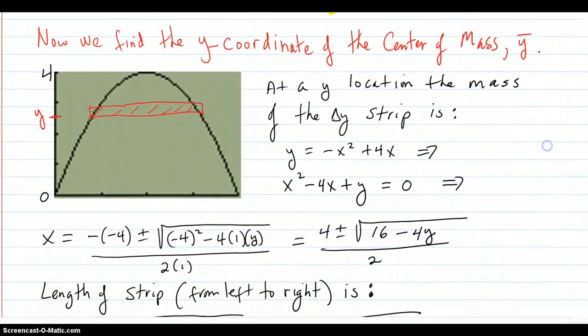So we're trying to find y bar here, which is center of mass in the y-direction. So at a y-location, you have a strip here of area. And that's going to be a little bit more difficult to figure out how wide that strip is. It certainly has delta y height, but how wide is it?